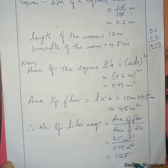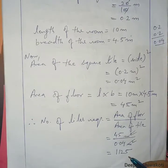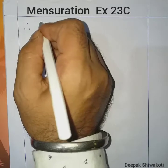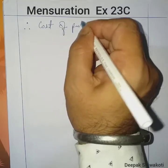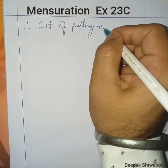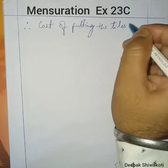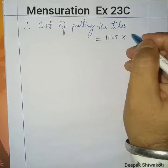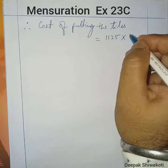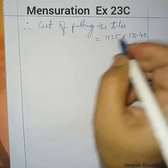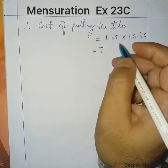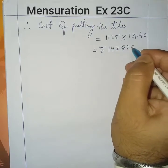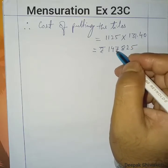These 1,125 tiles are required to lay on the floor. Now we have to find the cost. Cost of putting the tiles = number of tiles × cost of 1 tile = 1,125 × ₹131.40 = ₹1,47,825. This is the total cost to put the tiles on the floor.